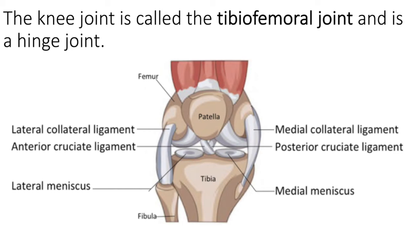There's a lot going on with the knee so it's worth exploring. The two ligaments on either side of the knee are the lateral collateral ligament, which joins the femur to the fibula, and the medial collateral ligament, which joins the femur to the tibia. Those two collateral ligaments stabilize the knee.